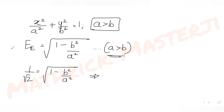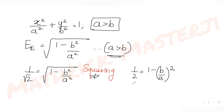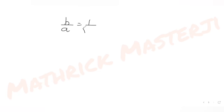Squaring both sides gives 1/2 = 1 - (b/a)². From this, (b/a)² = 1 - 1/2 = 1/2. Taking the square root of both sides, we get b/a = 1/√2.